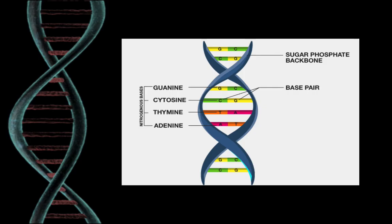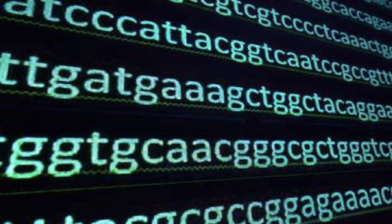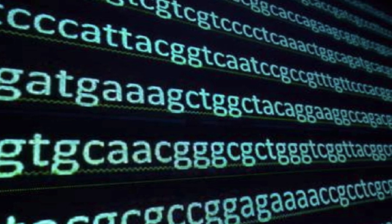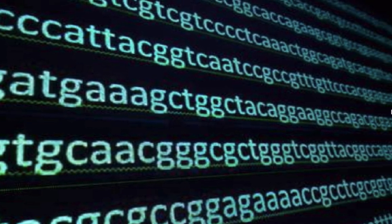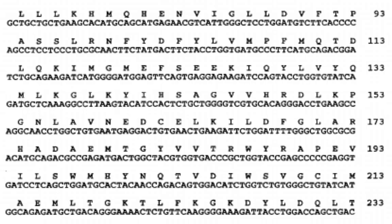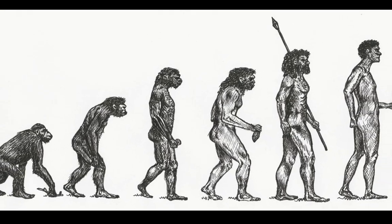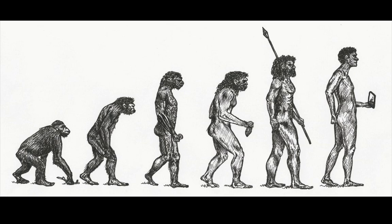DNA from all organisms is made up of the same chemical and physical components. So the information for everything about an organism is carried in the order of bases in their DNA — like a language. The difference lies in the order of the bases, and the more alike two organisms are, the more alike their order of bases will be.